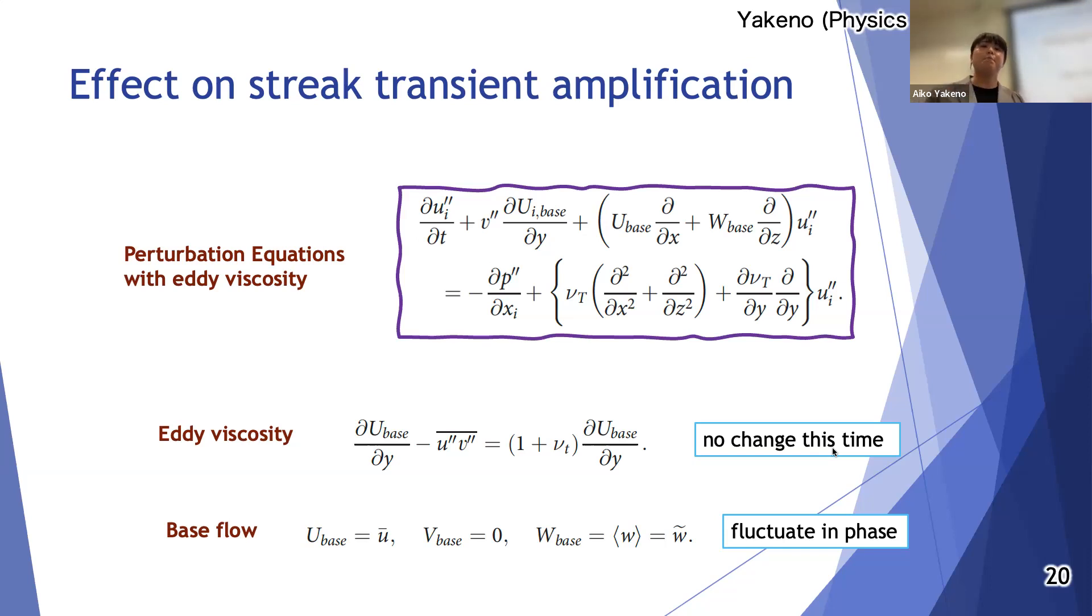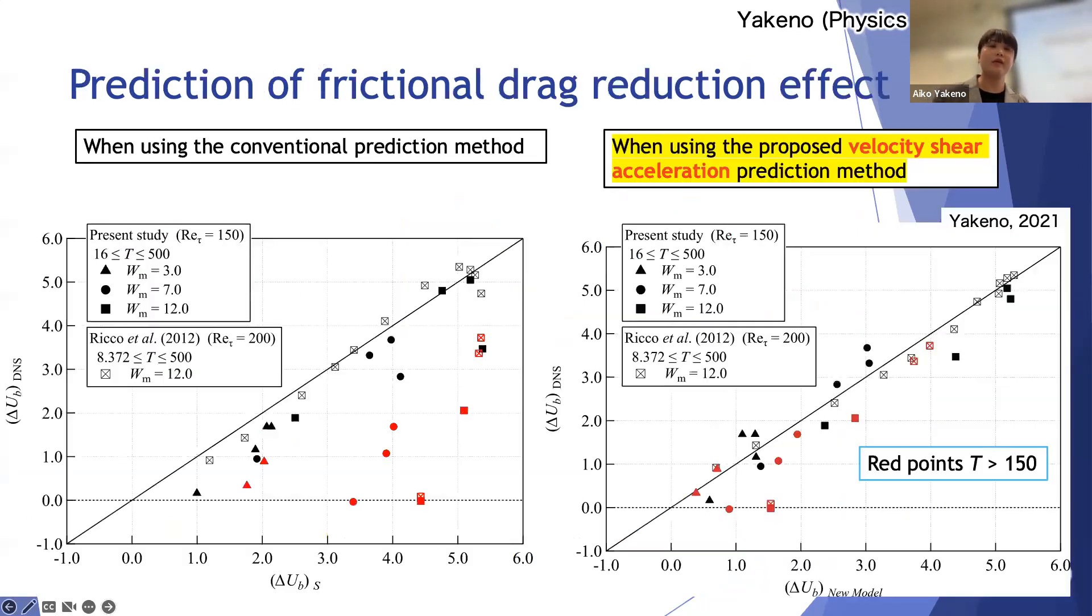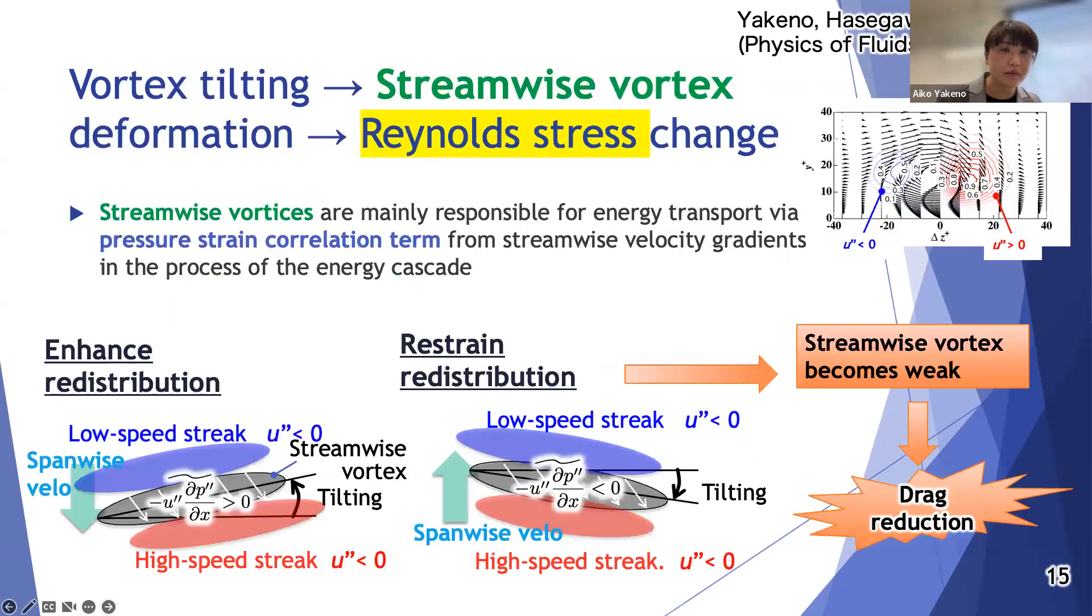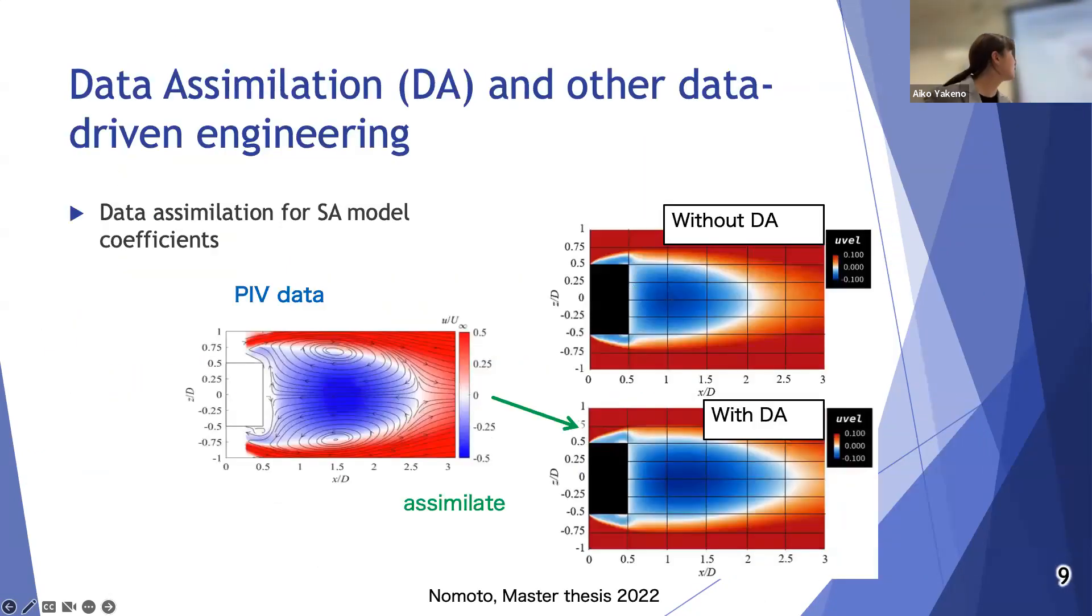There's a question in the Zoom chat, so I'll just read that out from Michelle. Are the control plots on the right in the DA slide... So it's asking, are they of the same quantity as that in the PIV plot? Sorry. Yeah, this is minus 0.5 to 0.5. This is minus 0.1 to 0.1. It'll be different.